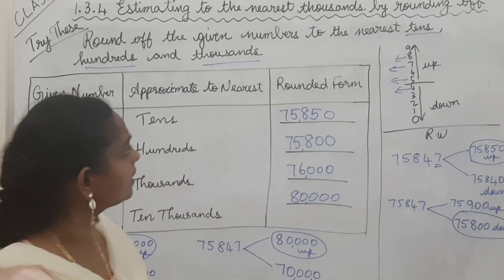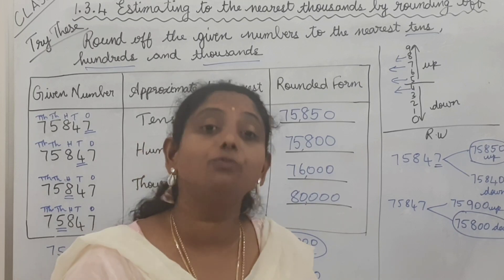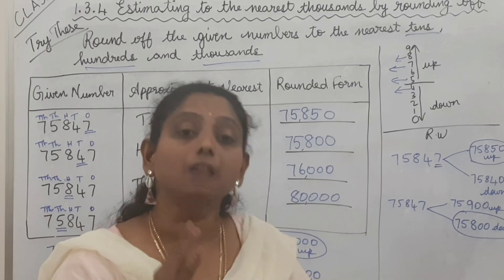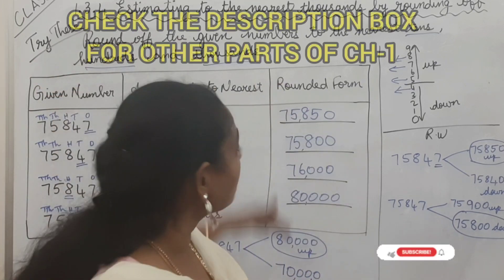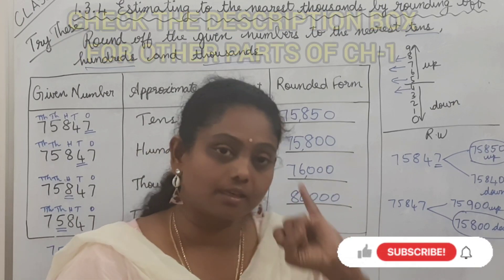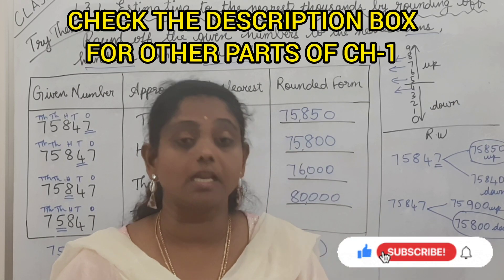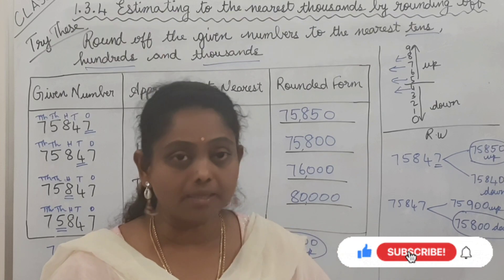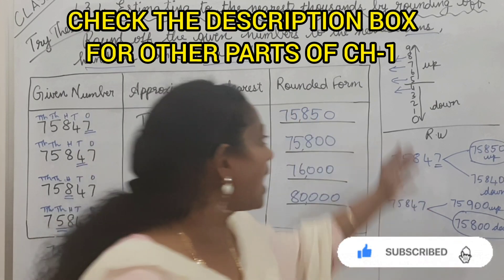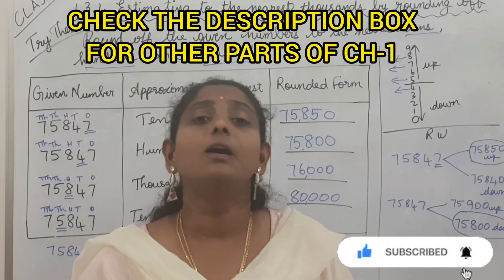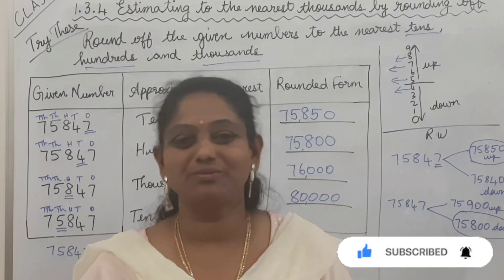Hope this is clear for you. In this class we saw how to round off to nearest thousands. We also did the 'Try These' questions covering rounding off to nearest tens, hundreds, thousands, and ten-thousands. Hope the concept is clear and you remember the rule. Please like, share, and subscribe to my channel. Thank you.